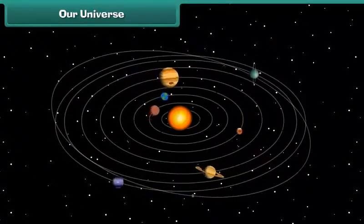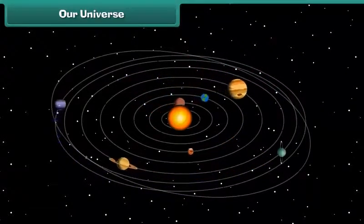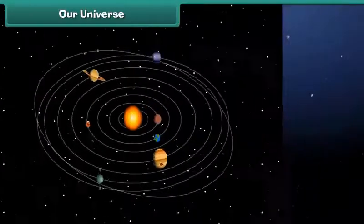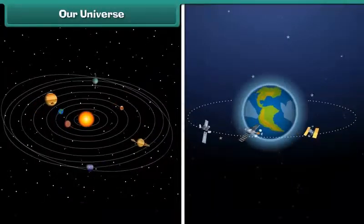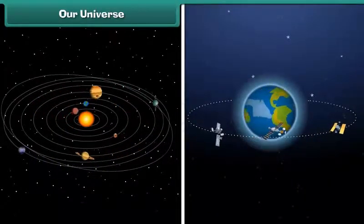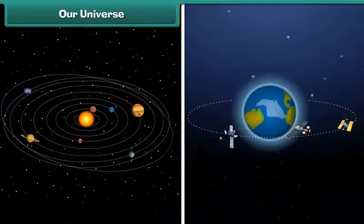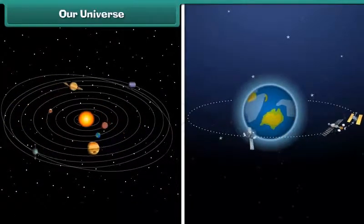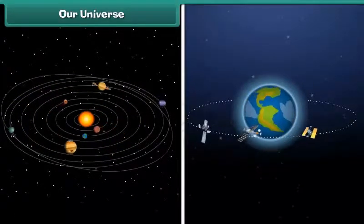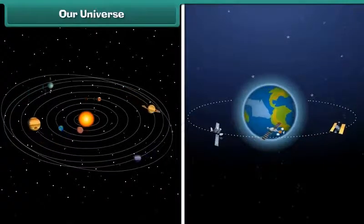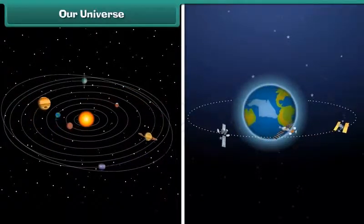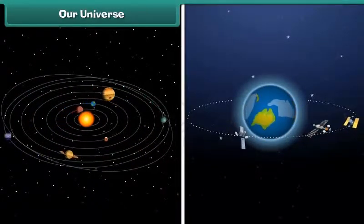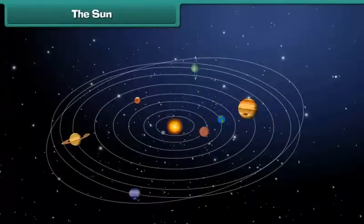Friends, all that we see in the sky is just a part of the universe. There are many stars, planets, and satellites in the universe. They all appear to be very small, though they are too far from us, but actually they are very large in size. Do you know that our planet Earth is also a part of the universe?